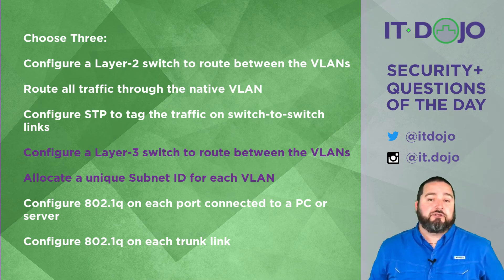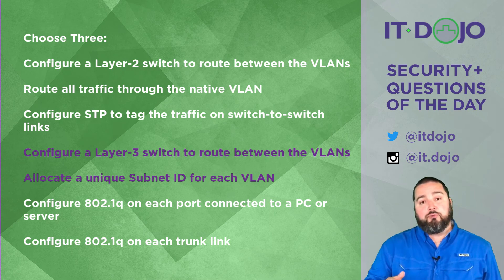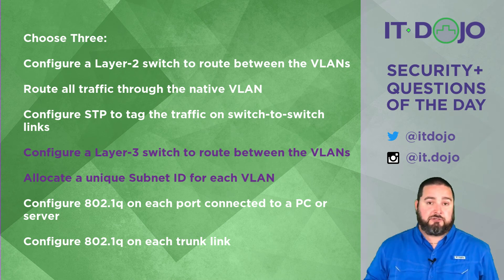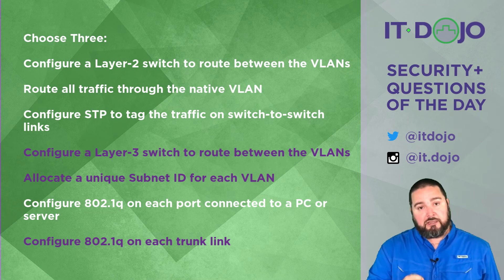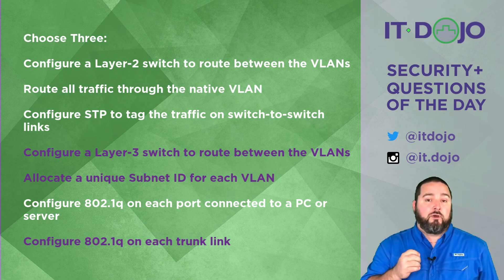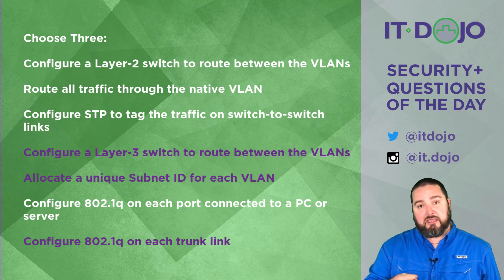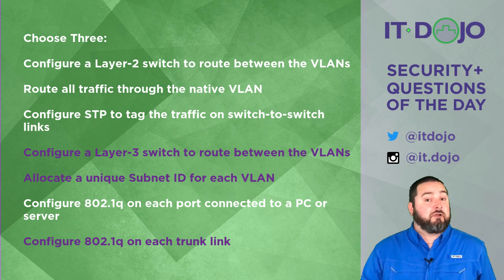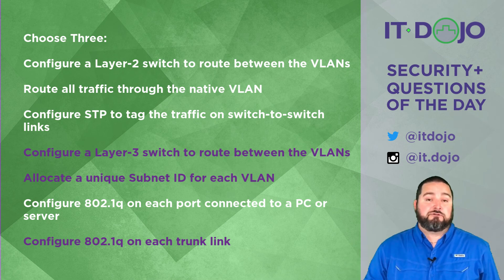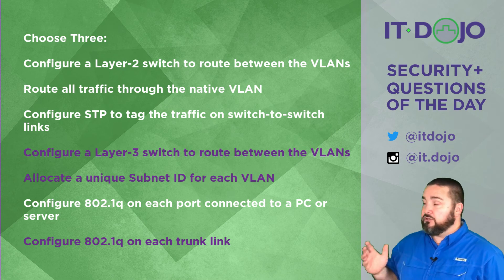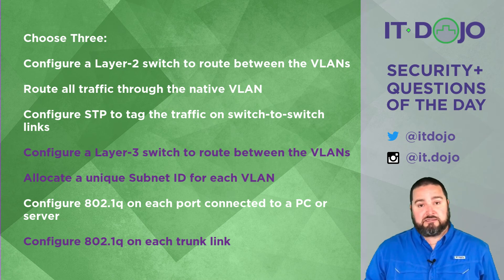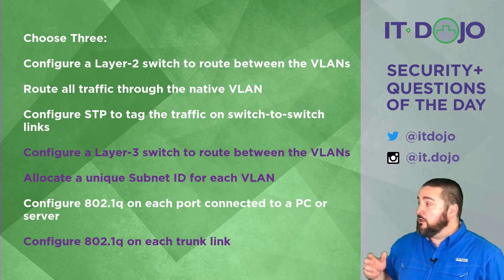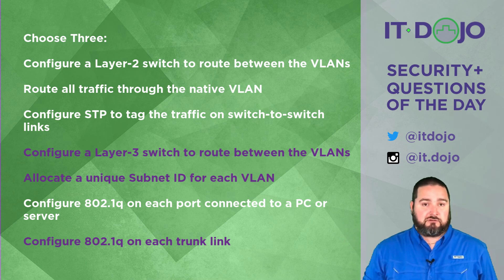The next-to-last choice says configure 802.1q on each port connected to a PC or server — no. The last answer is what you want: configure 802.1q on your switch-to-switch trunk links. 802.1q is a tagging or trunking protocol that labels the VLAN from which traffic came as it travels from one switch to another. You would not want to run 802.1q on ports that just have PCs and servers connected — with some caveats for server trunking, but that's beyond scope here.